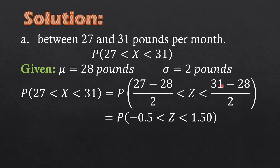For x equals 31: (31 minus 28) equals 3, divided by 2, gives 1.5. So our z-score for x equals 27 is negative 0.5, and for x equals 31 the z-score is 1.50.